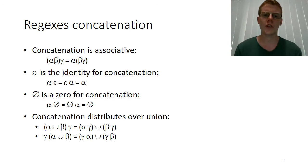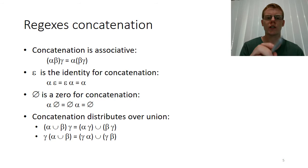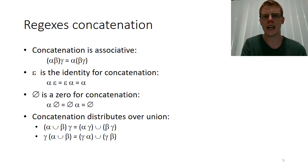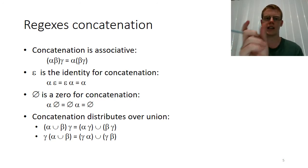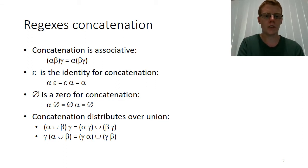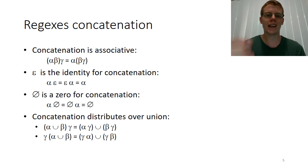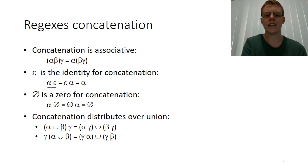Now we're going to talk about concatenation, which is where we start to see some regex-specific behavior. Concatenation is associative — if I have three regexes alpha, beta, gamma concatenated, it doesn't matter which order I concatenate them in. Secondly, the empty string epsilon is our identity for concatenation. When we concatenate epsilon onto something, it doesn't change it — alpha epsilon is exactly the same as alpha.